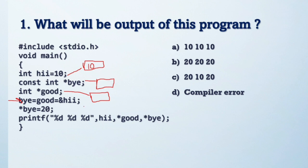After this line, bye is equal to good, which is equal to the address of hi. So good indicates hi, which has a value of 10, so it will give 10 here. Inside good stores 10.